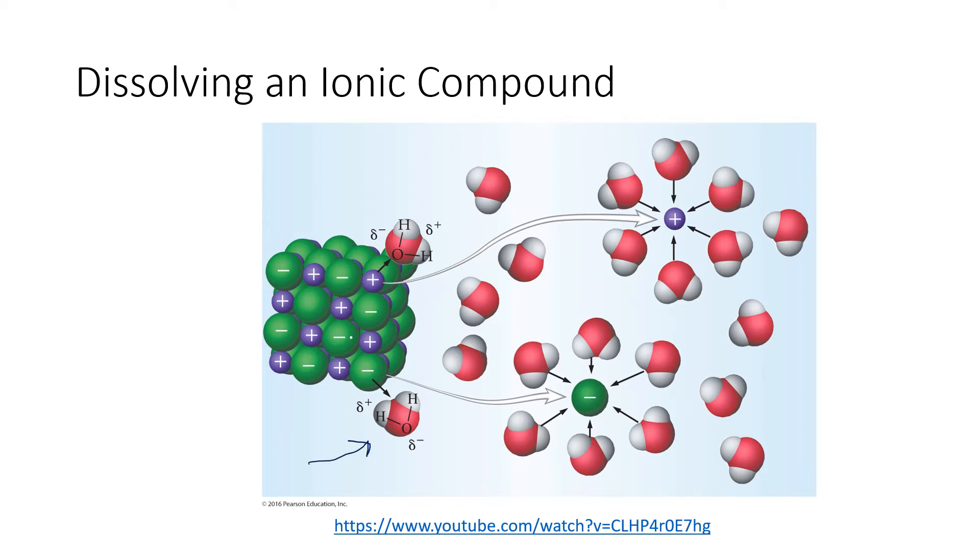Notice how the positive hydrogen end of the water molecule is approaching the negative chloride ion. And if a bunch of water molecules all approach that chloride ion and start tugging on it, soon they have enough strength to pull it away from the rest of the crystal. The dissolved chloride ion ends up surrounded by water molecules that are all pointing that positive hydrogen end at it.